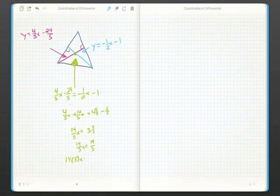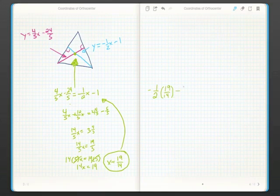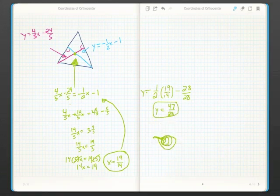There we go. Boom, boom, boom. Five can cancel out. So x equals nineteen over fourteen. I'll plug it back into my simpler equation. I'll find out that y equals forty-seven over twenty-eight.